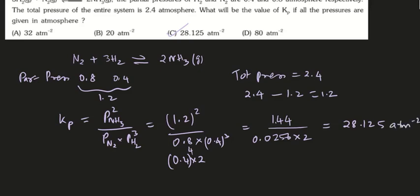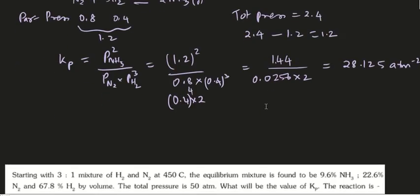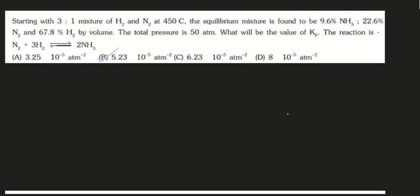Those who got it correctly can go to the next problem. The next problem is here. Pause the video, note down the problem, and try to solve it yourself. Those who solved it: if you got it correctly, the correct answer is B — 5.23 into 10 to the power minus 5 per atm squared. Now let us see how to solve this problem.